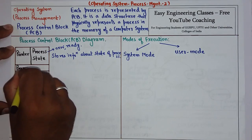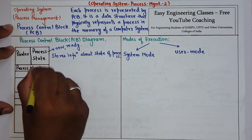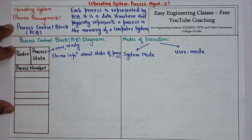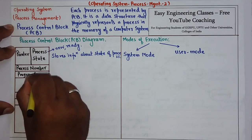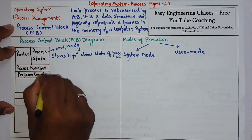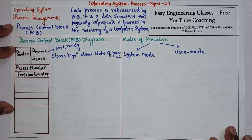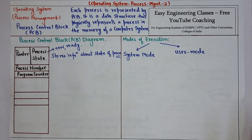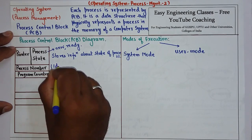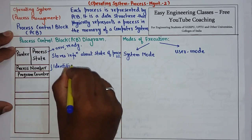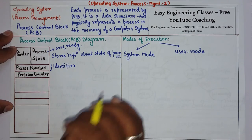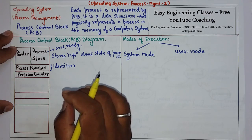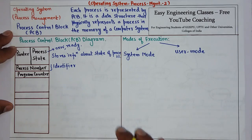Then we have process number. Process number is simply an identifier which is used to distinguish among the processes. Then we have program counter. The program counter indicates the address of the next instruction to be executed for this process.